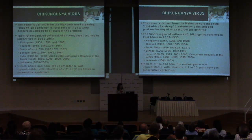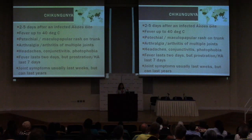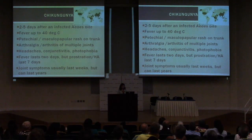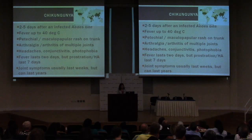The signs and symptoms of chikungunya look a lot like dengue. Two to five days after an infected Aedes bite, you can have an abrupt onset of very high fever — up to 40°C — as well as a maculopapular rash on the trunk or extremities, arthralgia and arthritis with symmetric swelling and pain of the joints, headaches, red eyes, and photophobia. The fever is short-lived — only a few days — but the prostration and headaches can last about a week, and unfortunately the joint symptoms last much longer.